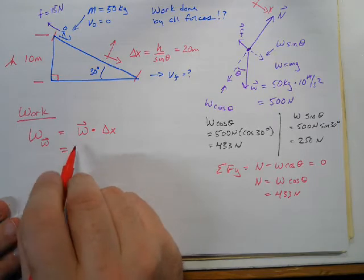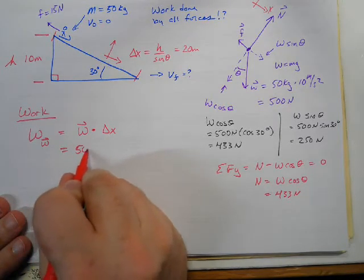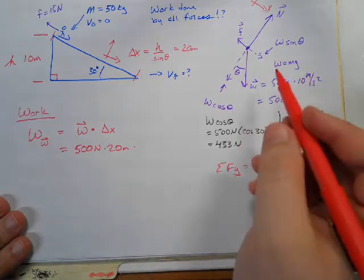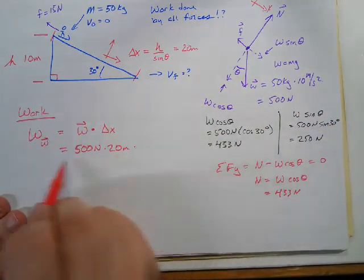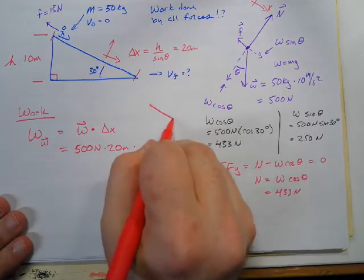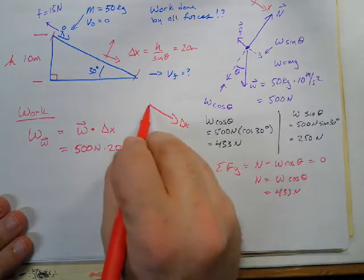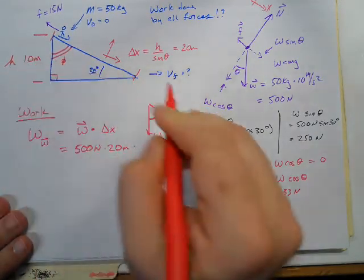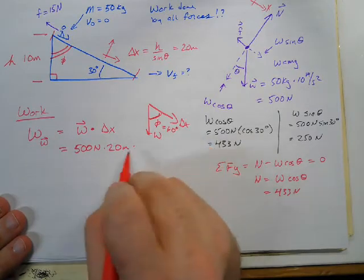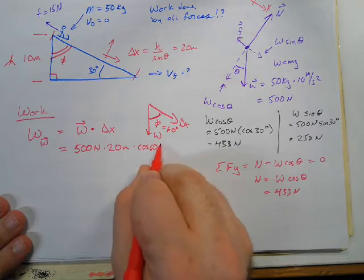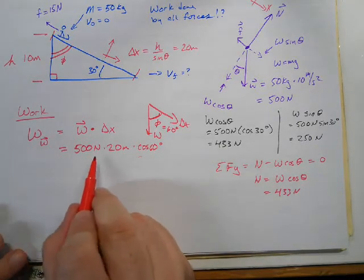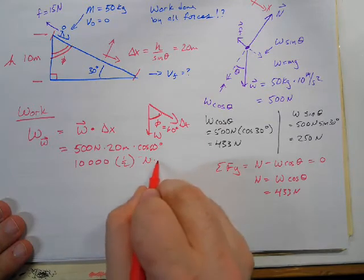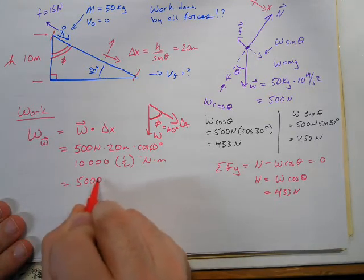So, we can now put this in. We can put in our weight force is 500 newtons times 20 meters times. Now we've got to figure out the angle between our forces and our displacement. Well, for this problem, we have a displacement is down the ramp. And our weight is down like this. This angle is this angle up here. And that is 60 degrees. So we'll do cosine of 60 degrees. Cosine of 60 is one half. This is 10,000 times one half newton meters is 5,000 joules.